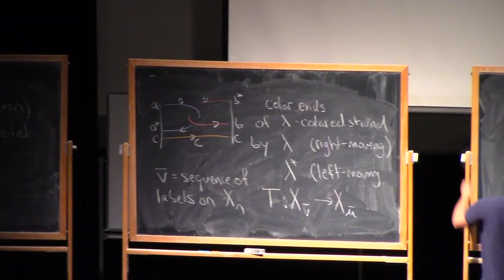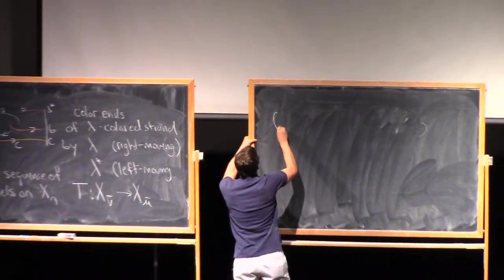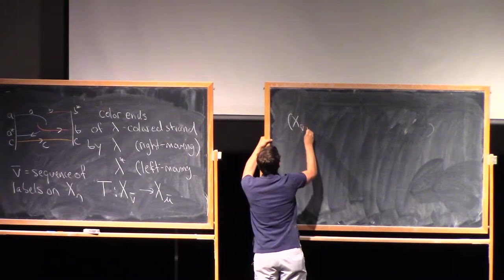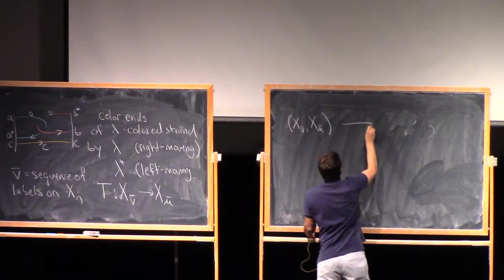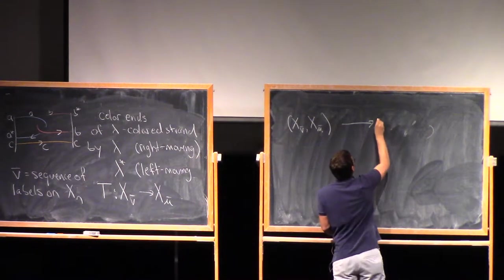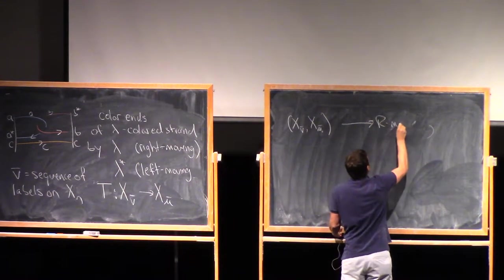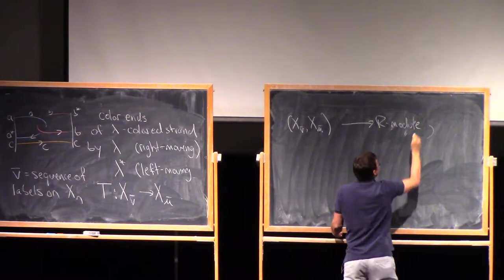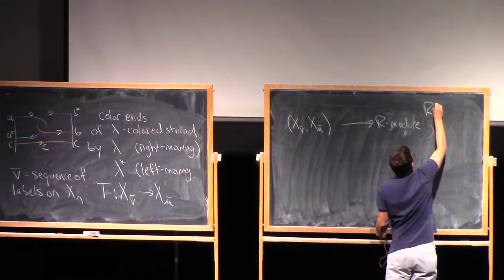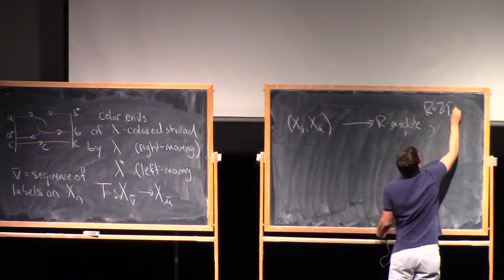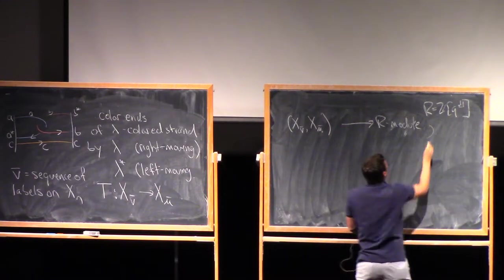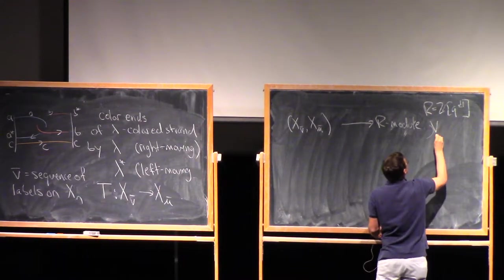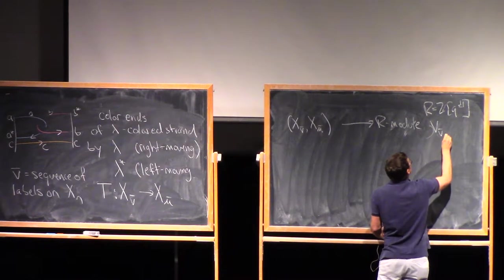And by the dual representation, lambda-dual, if I'm left-moving. So for example, this would be labeled by an A-dual, and this would be labeled by a B-dual. So let's say nu bar is the sequence of labels on my set of left endpoints.